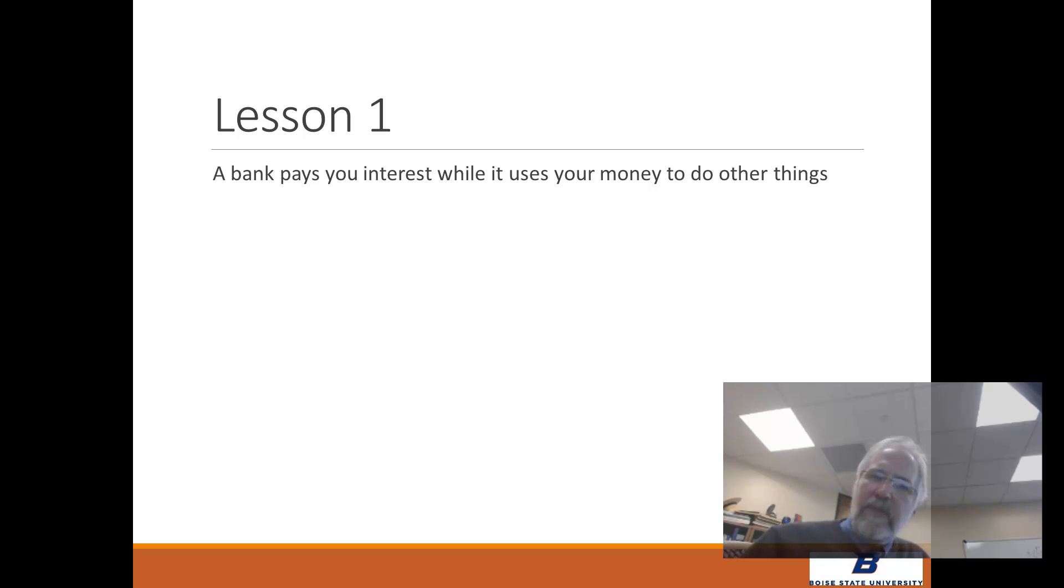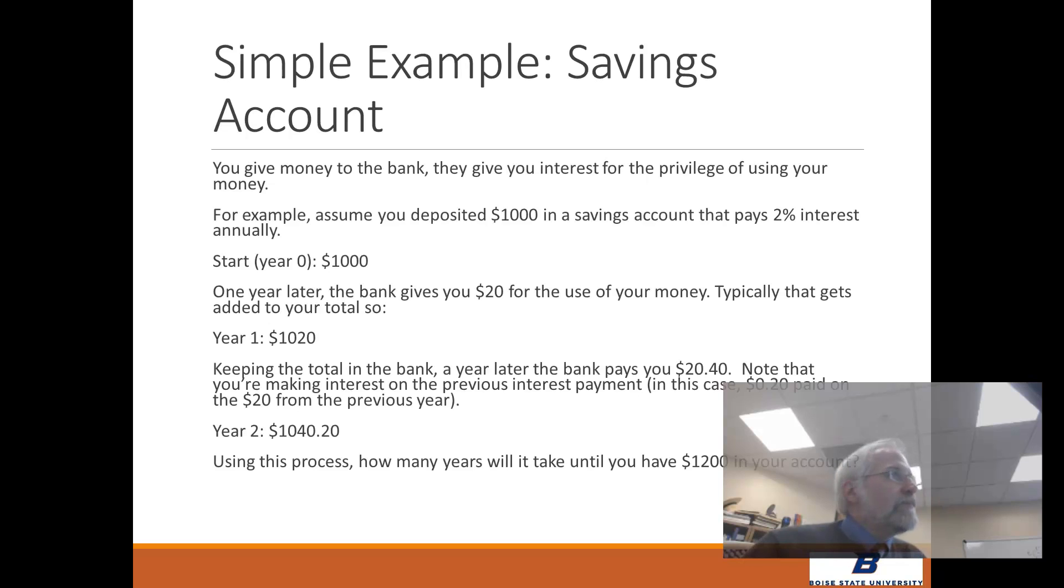So lesson one, really simple. Simple interest on a deposit. You put money in the bank, they don't put it in a vault. They use that money and invest it to make other money for themselves, but they pay you interest for that privilege. So you take money to the bank, say you've got $1,000, put it in a savings account, and it pays 2% interest annually. Beginning year zero, you put $1,000 in.